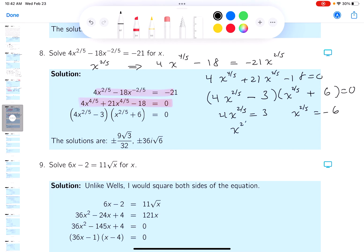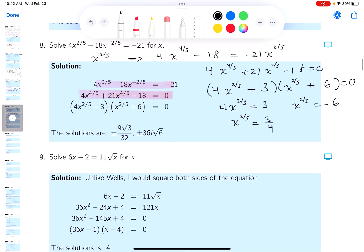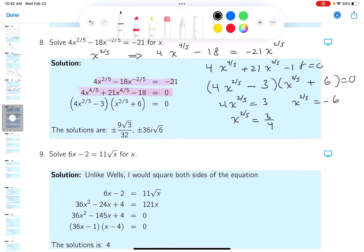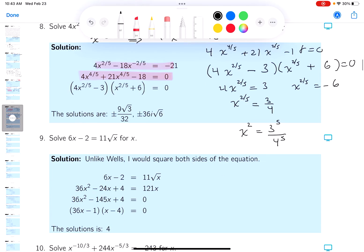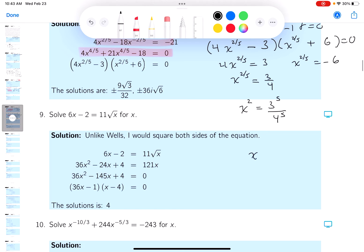All right. x to the two-fifths equals 3 quarters. Whoa. So x squared is equal 3 to the fifth, 4 to the fifth. I don't want to do that, by the way.